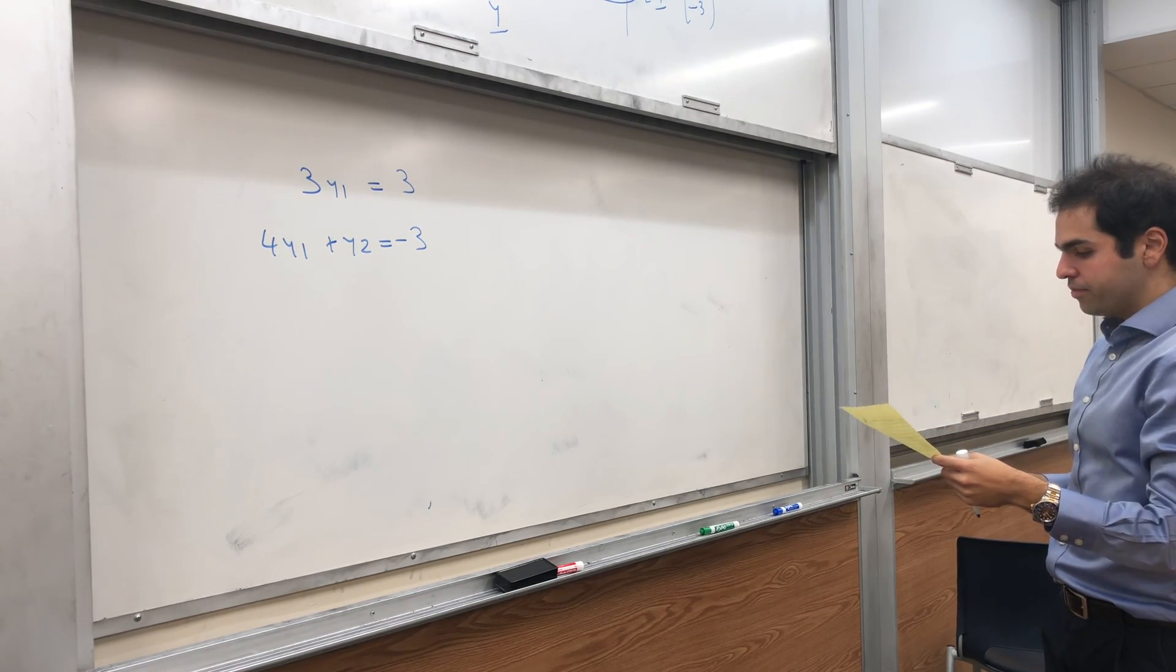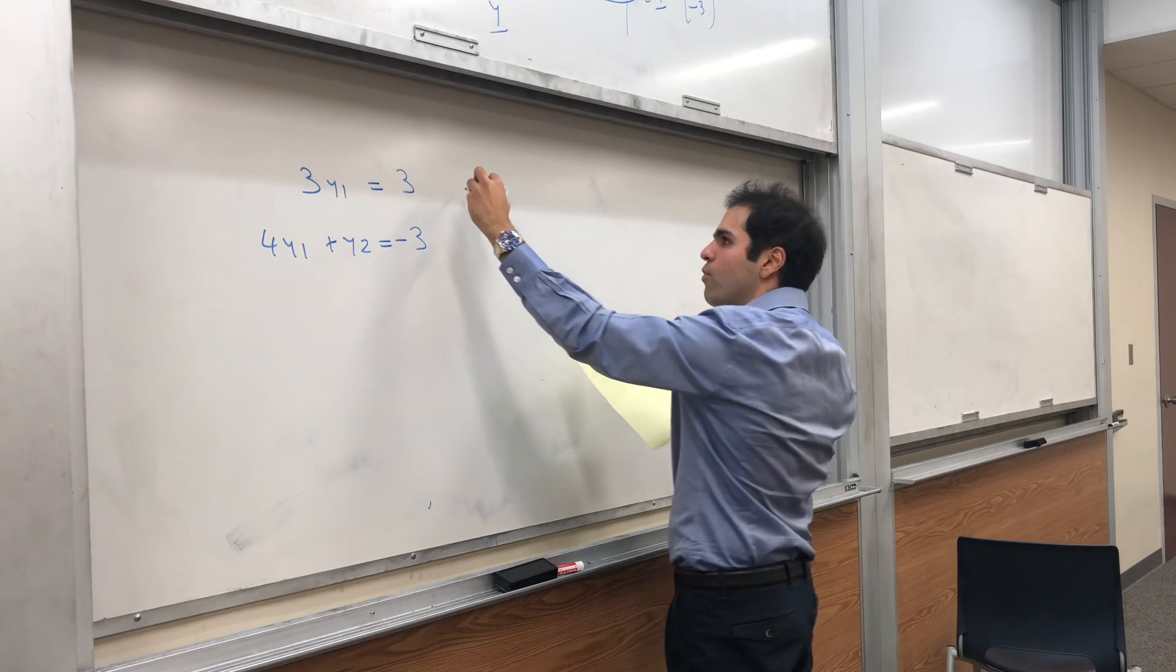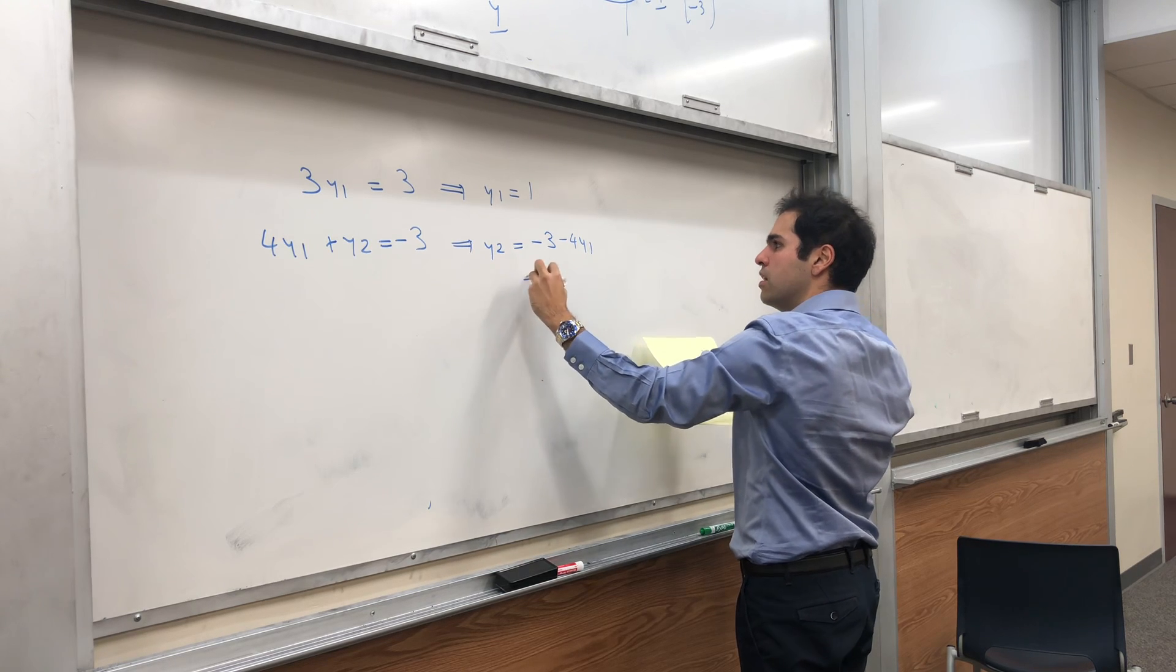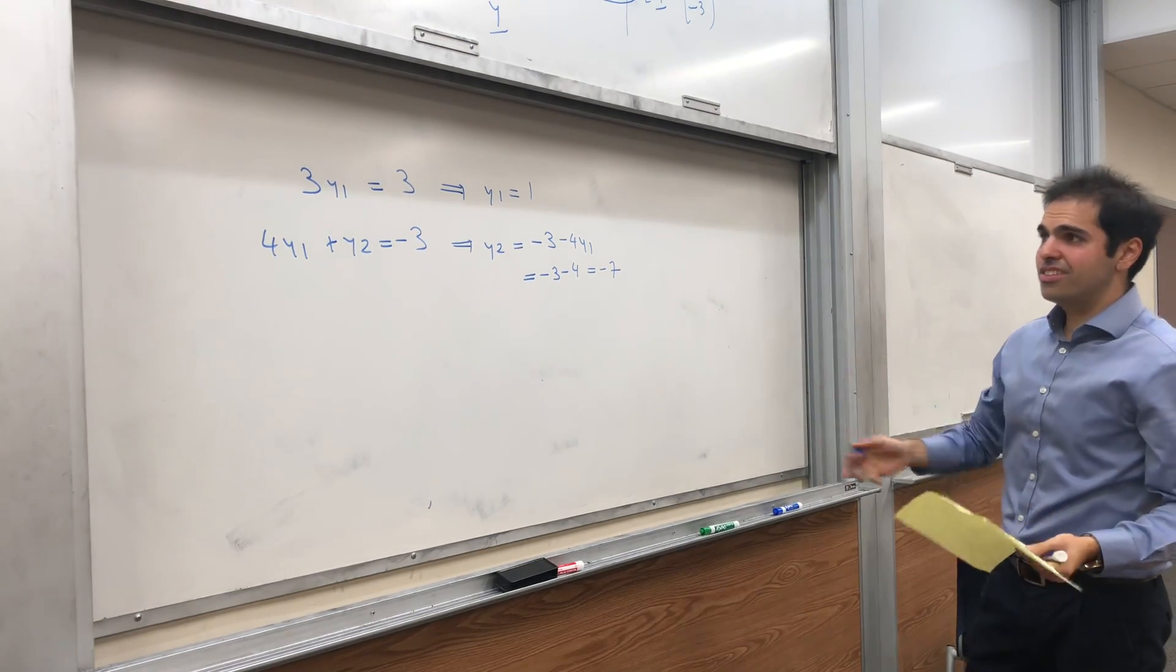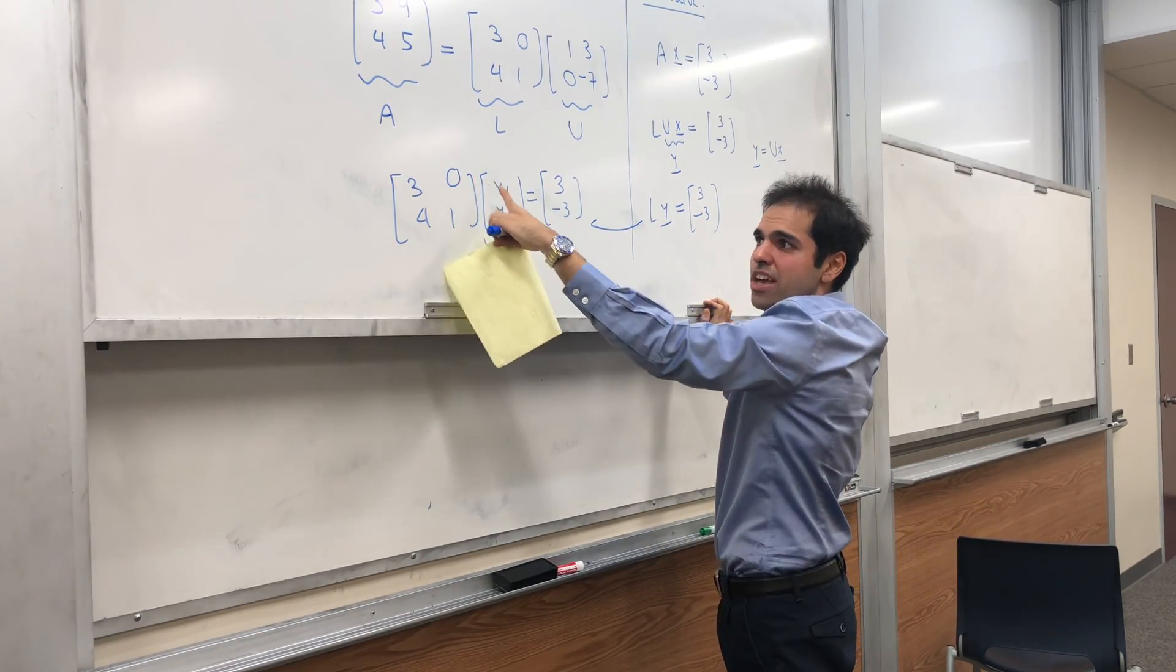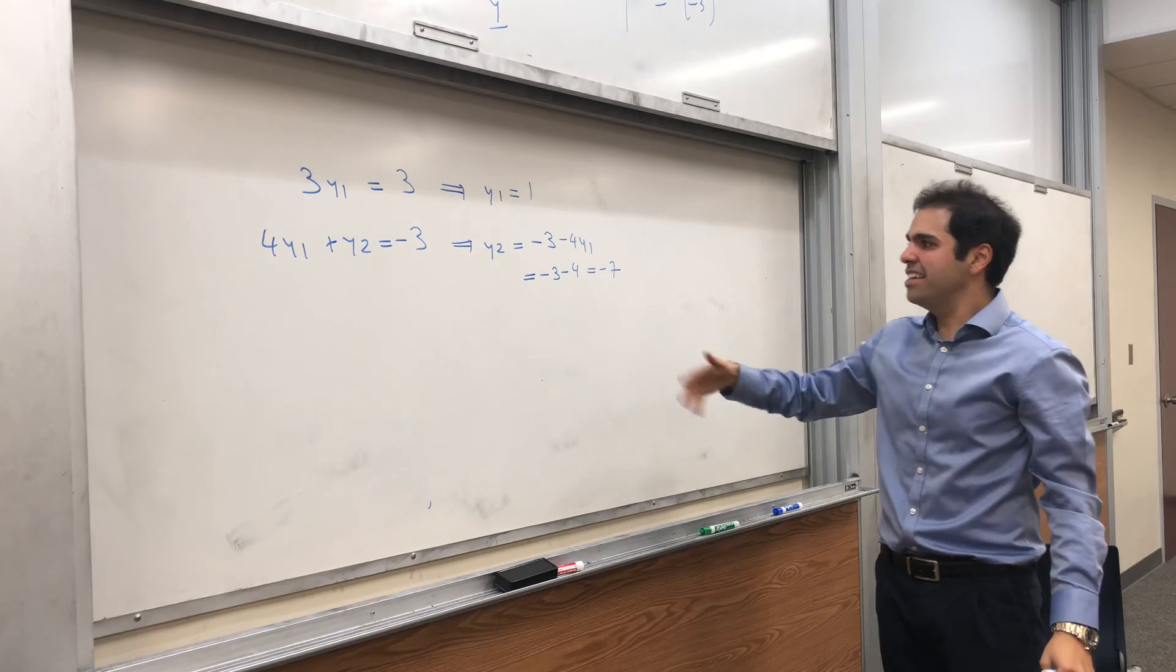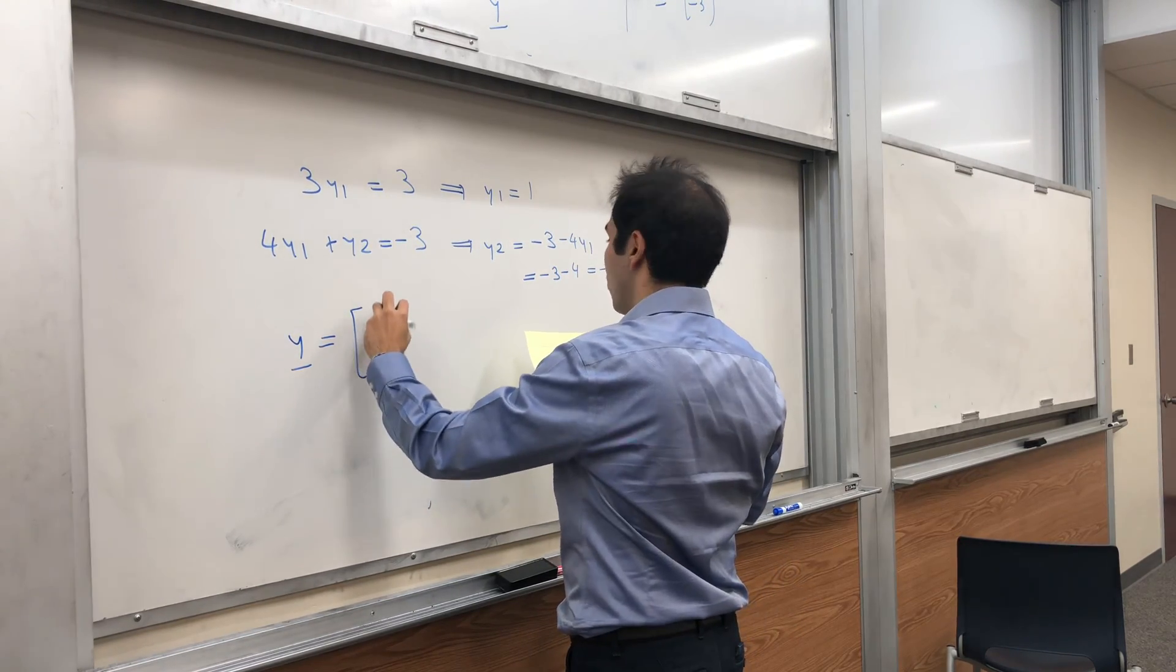So, we just get 3Y1 equals 3 and 4Y1 plus Y2 equals minus 3. And, then, notice this becomes much easier because first we solve Y1 to get 1, and then we solve Y2. Y2 is simply minus 3 minus 4Y1, and that's minus 3 minus 4, and that's minus 7. And, so, you see that's why the fact that this was lower triangular is useful. Because, the first equation becomes easy to solve, then the second one is easy to solve, then the third one, et cetera. So, you're taking a complicated system and essentially turn it into two systems that are easier to solve. In other words, what do we get? Y is now 1 minus 7.